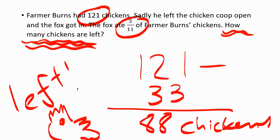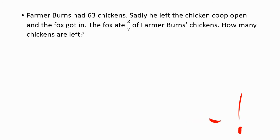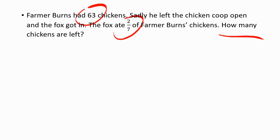That was the together phase. Now let's go into the try phase — you're going to try one all by yourself. I'll read it through with you, then you can try it. Farmer Burns had 63 chickens. Sadly, he left the chicken coop open and the fox got in. The fox ate two-sevenths of Farmer Burns' chickens. How many chickens are left? Key numbers: 63 chickens, two-sevenths of Farmer Burns' chickens. How many chickens are left? Have a go, all by yourself.